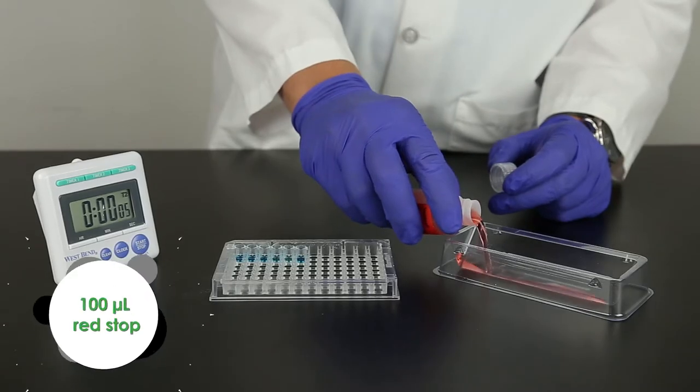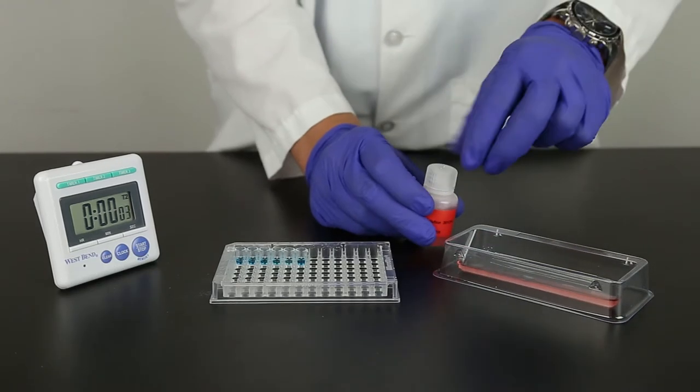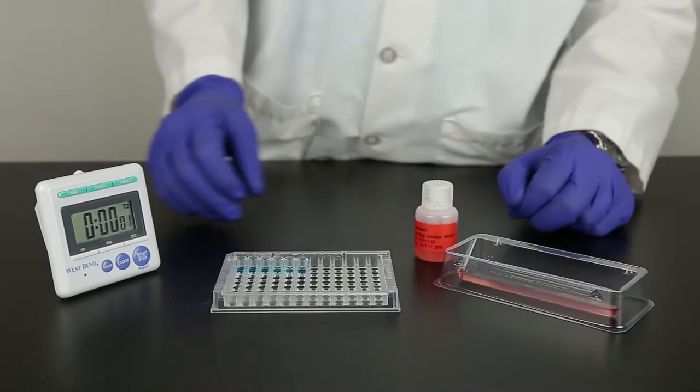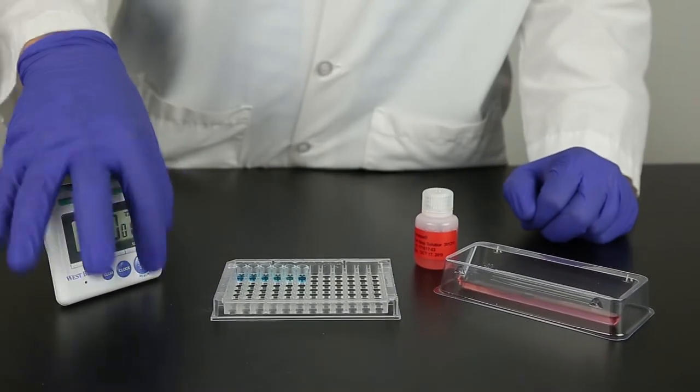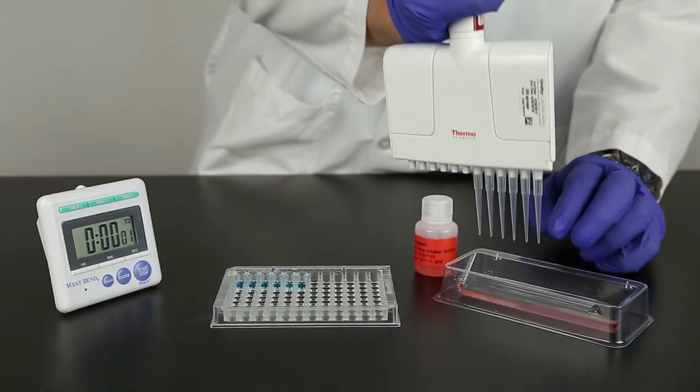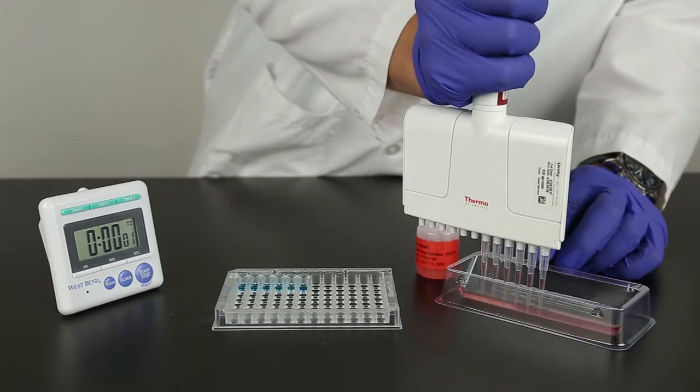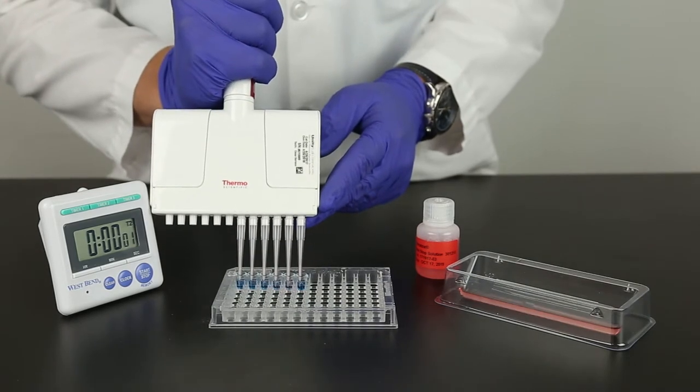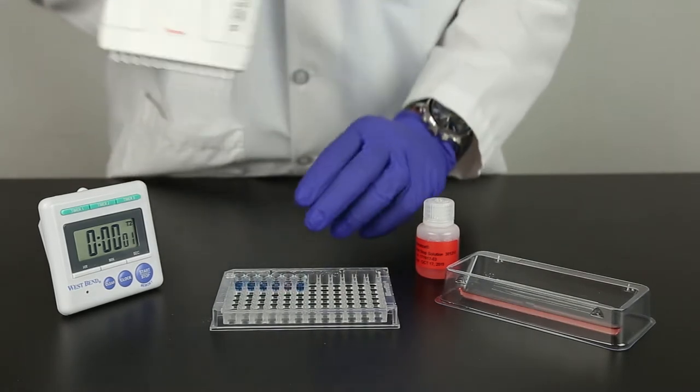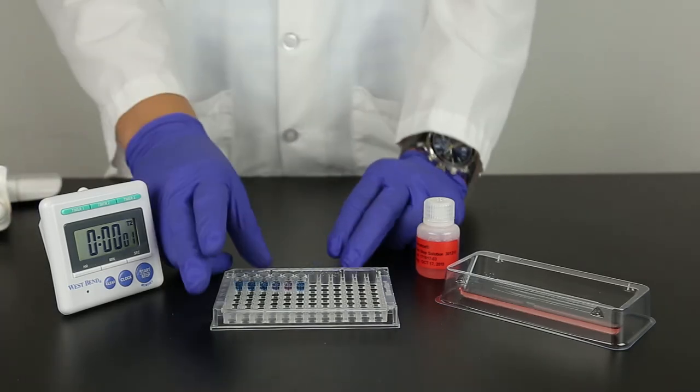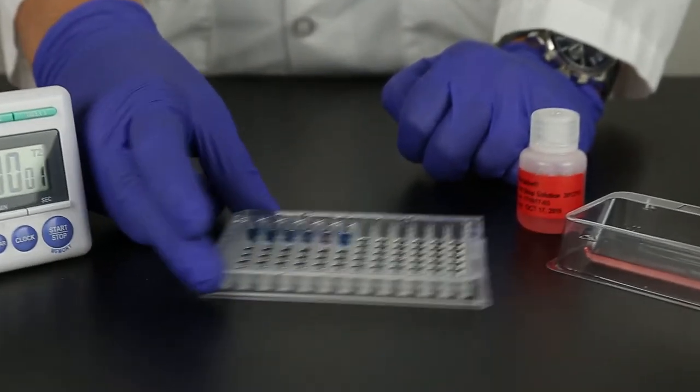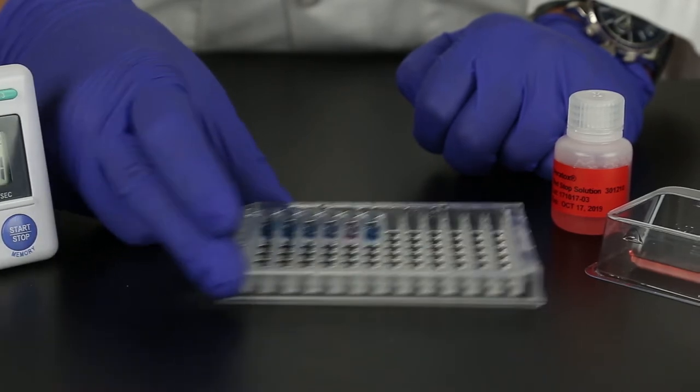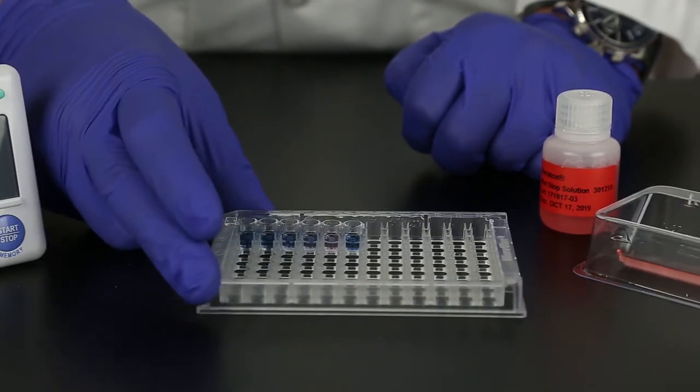Pour the needed volume of red stop from the red labeled bottle into a clean reagent boat. At the end of the five minute incubation, using new tips on the 12 channel pipetter, add 100 microliters of red stop to the wells. This stops the reaction and ends the test. Mix by gently sliding the well holder back and forth. Ensure the liquid is homogenous in color and you do not see any layering.